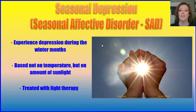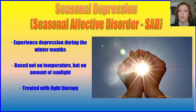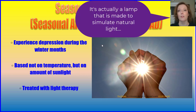Seasonal depression, or seasonal affective disorder, is where someone experiences depression during the winter months. It's not based on temperature — it's actually based on the amount of sunlight, and it is treated very effectively with light therapy. Basically, the person is exposed to a bright natural type of light for a period of time and their depression is improved.